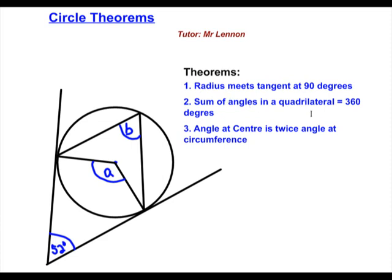Sum of angles in a quadrilateral four-sided shape is 360 degrees. And angles at the center of a circle is twice the angle subtended at the circumference of the circle by the same arc or chord.